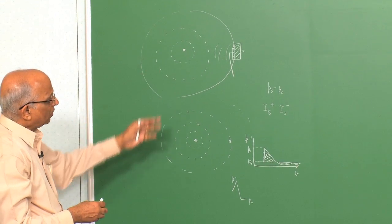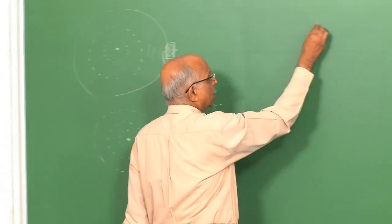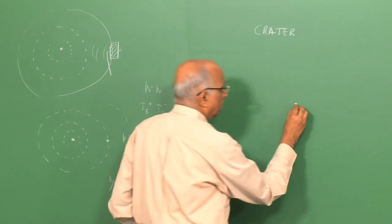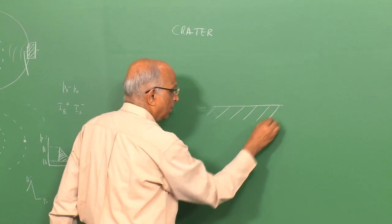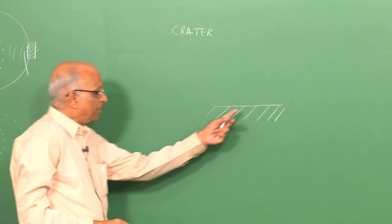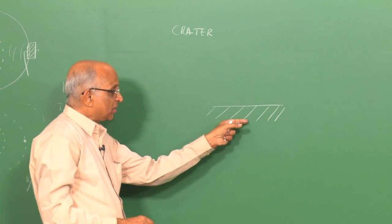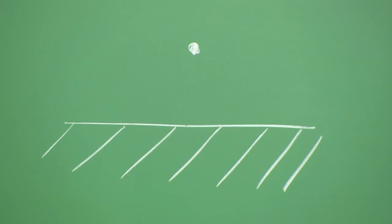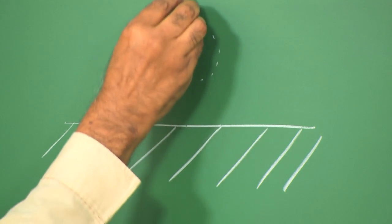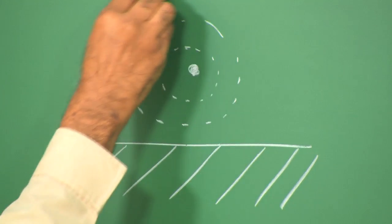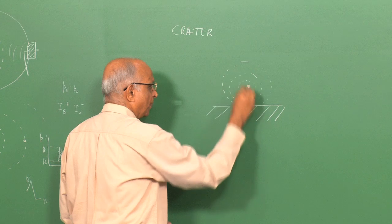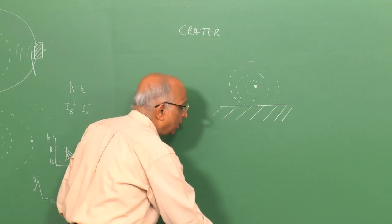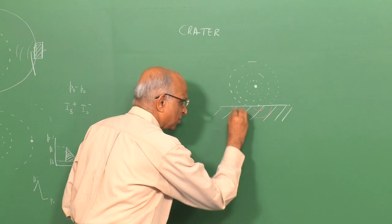Let me go back to the example of the crater which we talked of in the last class. I have the surface of the earth. I could have a blast wave originating from the surface — maybe a buried explosive — or I could have an explosion originating from a distance above the surface. The blast wave then propagates down and reaches the surface of the earth.